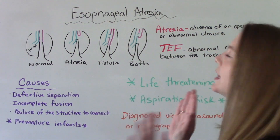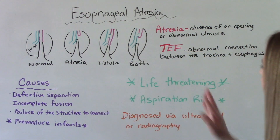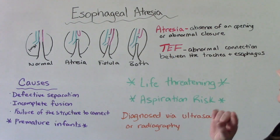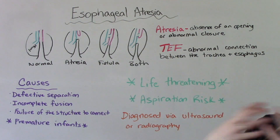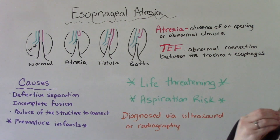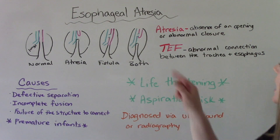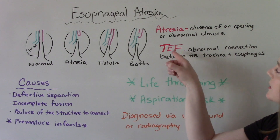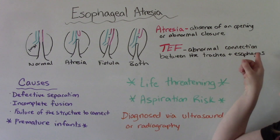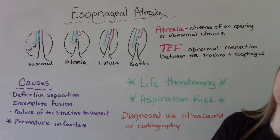Starting with a little bit of vocab here: what is an atresia? It is the absence of an opening of the body, or the abnormal closure of a part of the body. And then a TEF, a tracheoesophageal fistula, is an abnormal connection between the trachea and the esophagus.